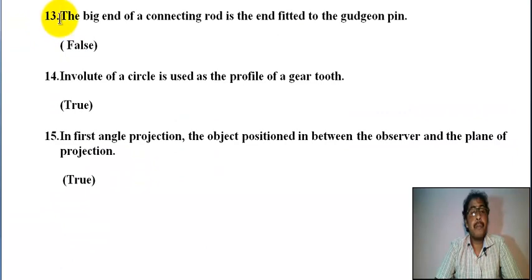Number thirteen: the big end of a connecting rod is the end fitted to the gudgeon pin. It is false because the end fitted to the crank.